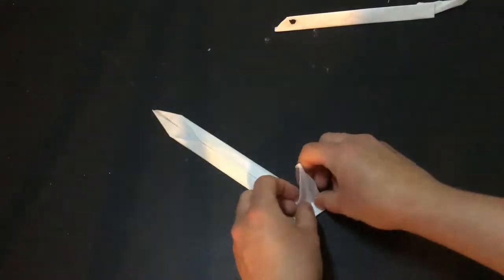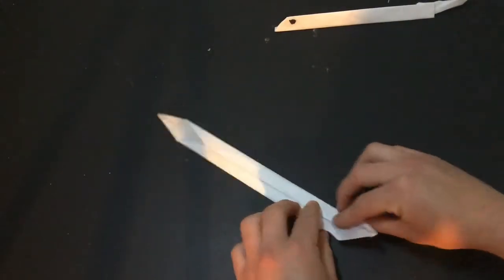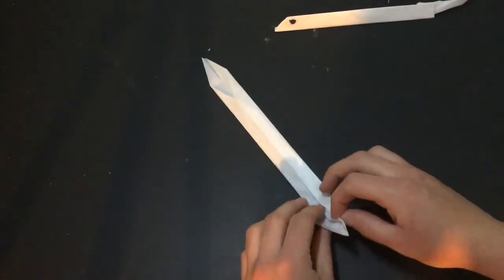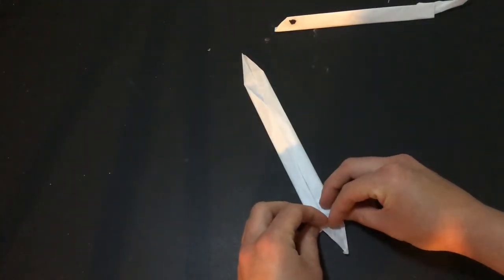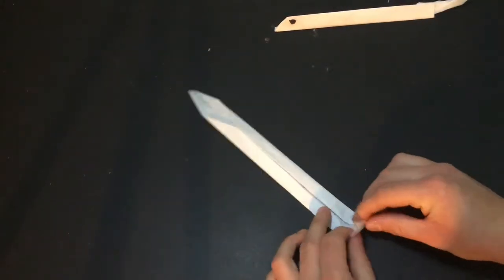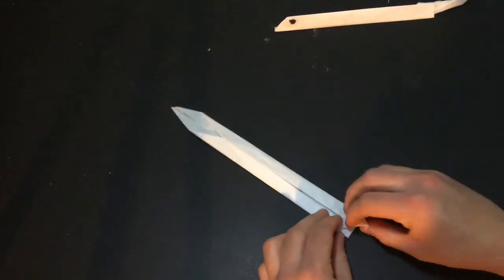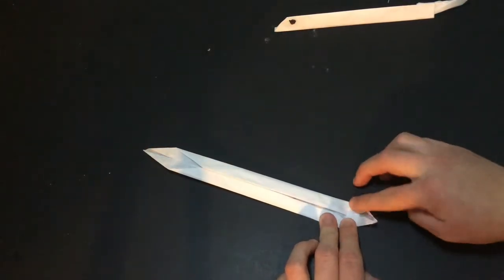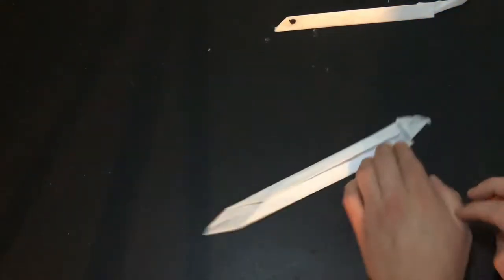Now we're gonna make the tail and the head. For the tail we're gonna do this double over fold like this. So you fold it over once and then fold it back over again. Make sure that part is nice and creased. And this is gonna be the tail.